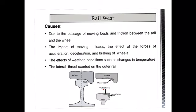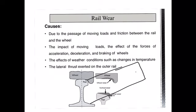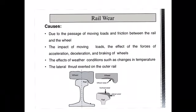Rail wear can occur in different ways. Vertical wear occurs on the top of the rail section. Lateral wear occurs on the sides of the rail section. Apart from these, wear can also occur at the ends of each rail section, which is called end wear. We will look into the various causes contributing to the occurrence of rail wear.